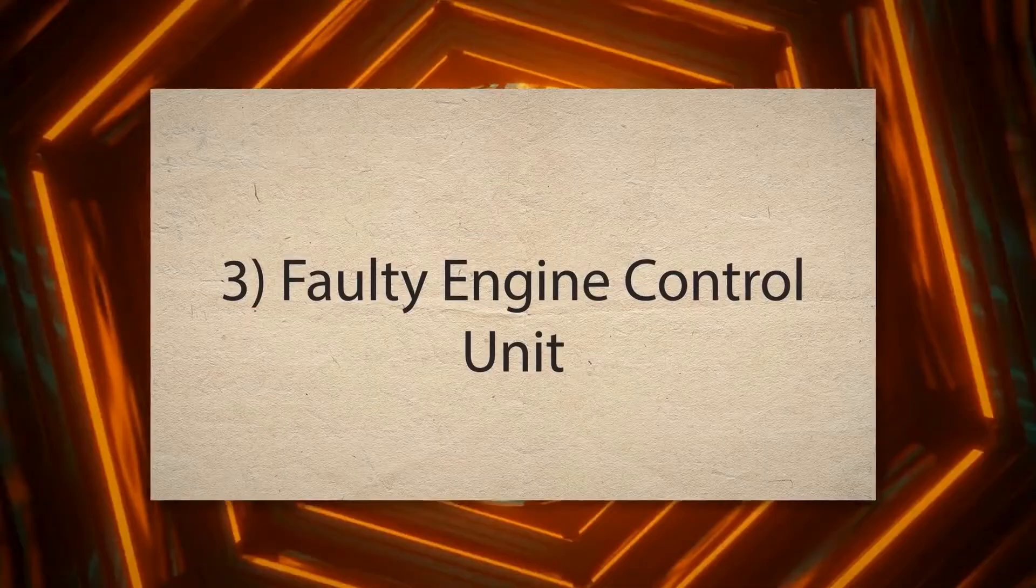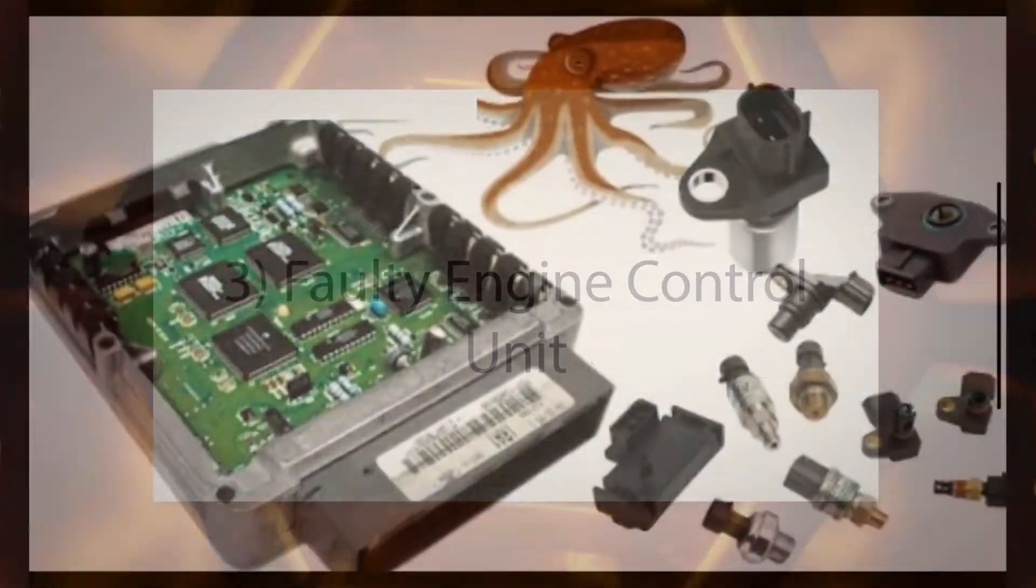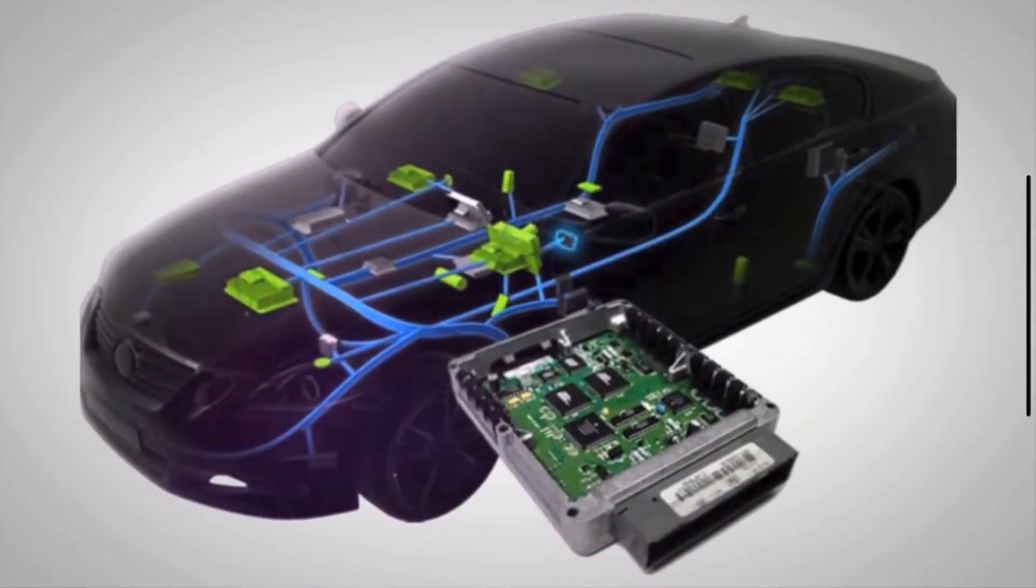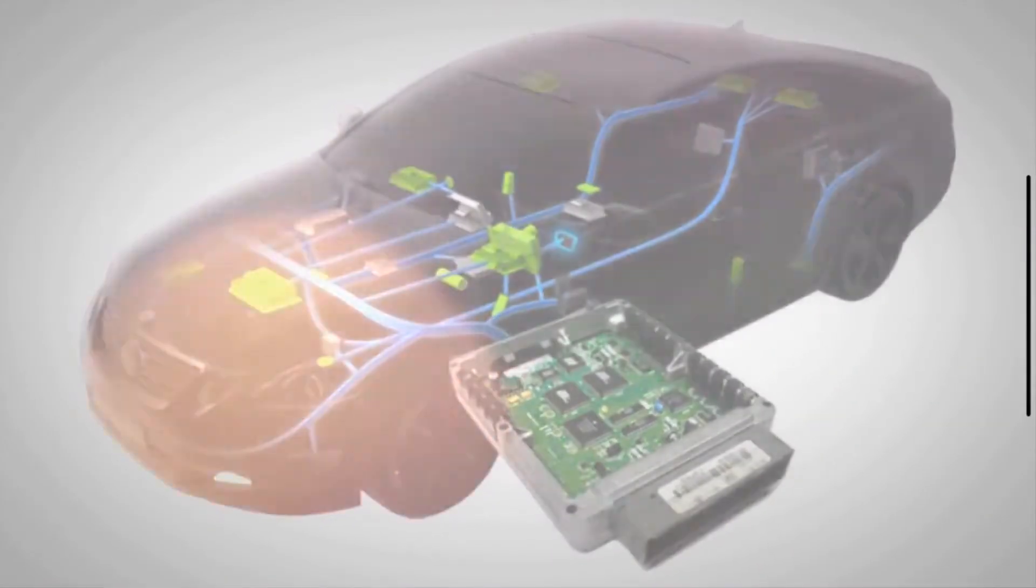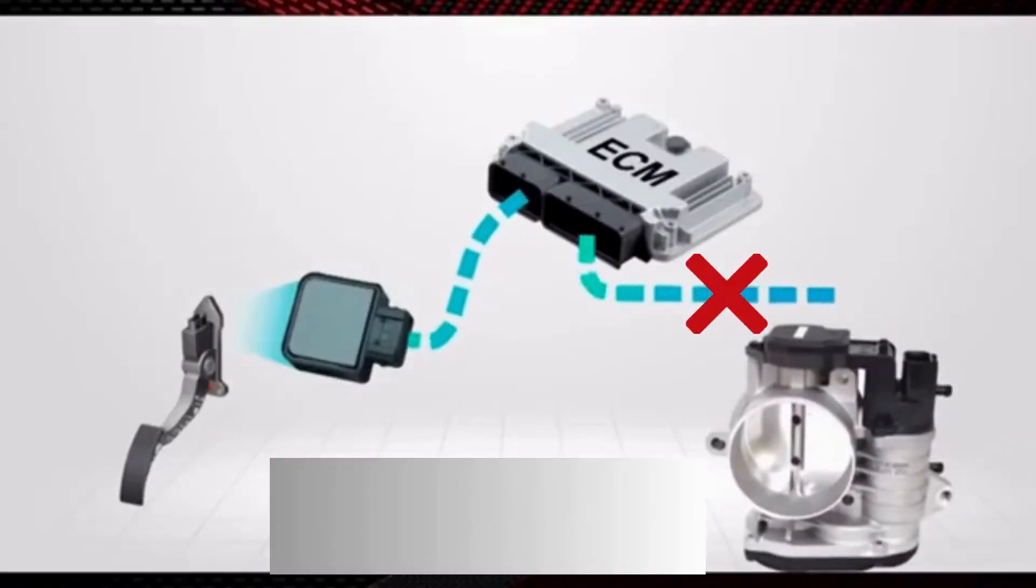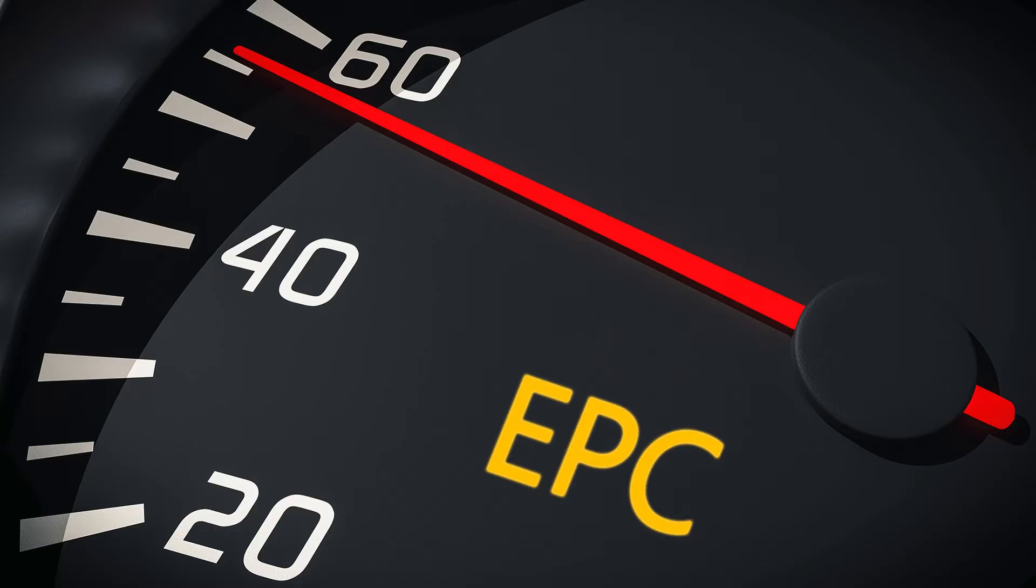Third, faulty engine control unit. The engine control unit is the brain of the vehicle's engine management system. It controls various functions, including throttle control. A malfunctioning ECU can misinterpret sensor data or fail to manage the throttle system correctly, triggering the EPC light.